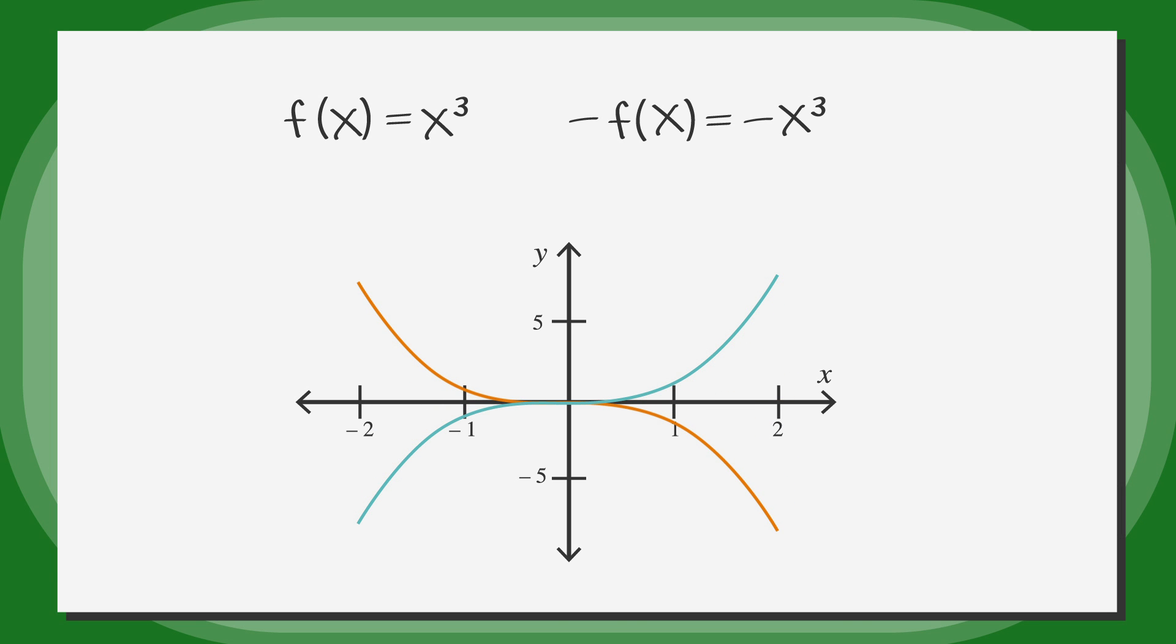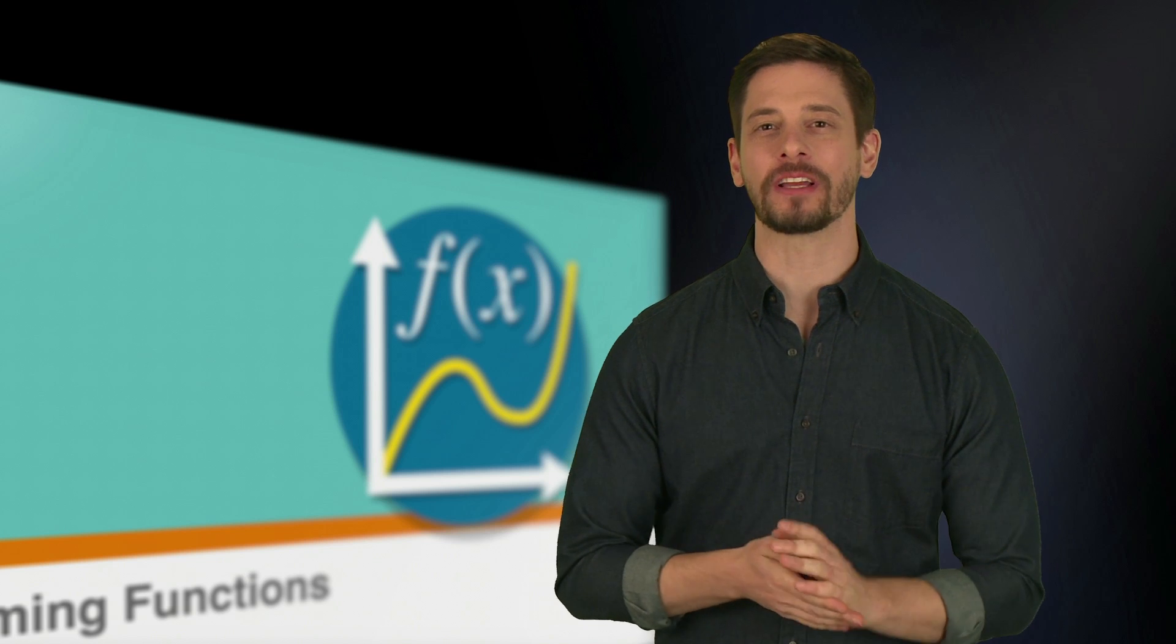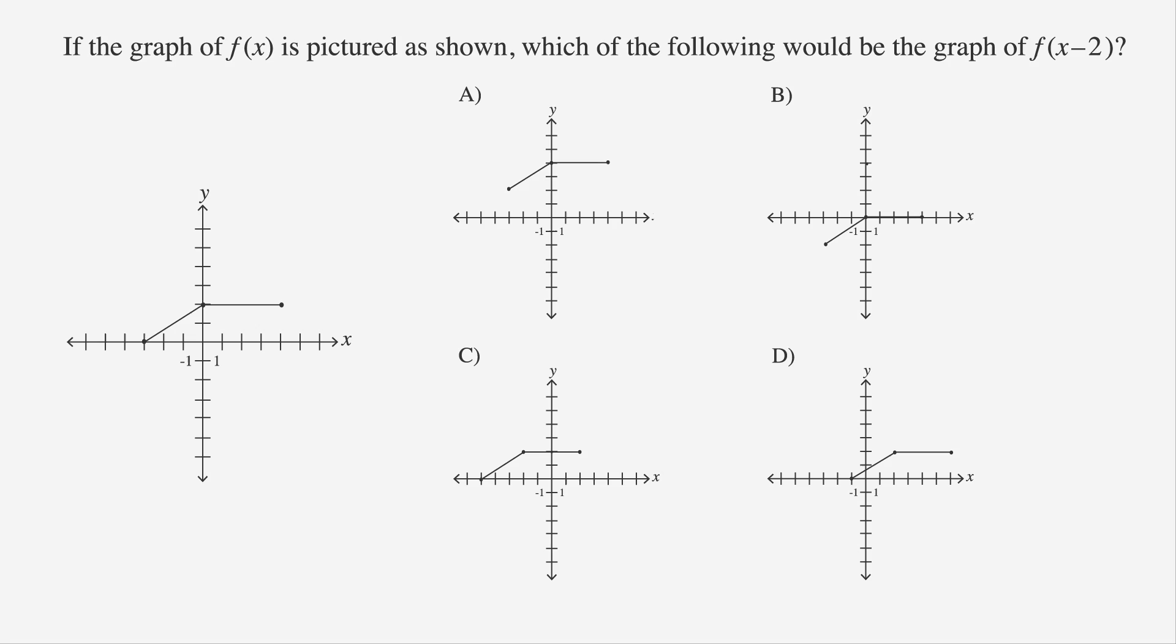Now let's look at an example problem involving transformations of functions. If the graph of f(x) is pictured as shown, which of the following would be the graph of f(x-2)? Our answer choices are four different graphs as possibilities with f(x-2).